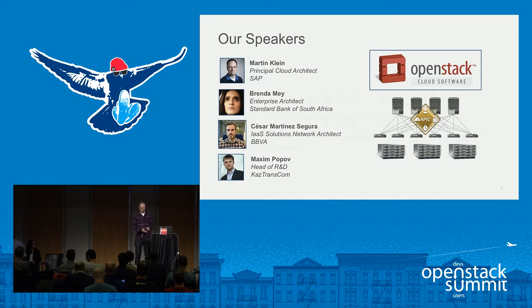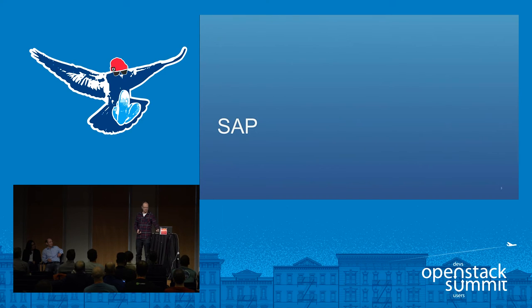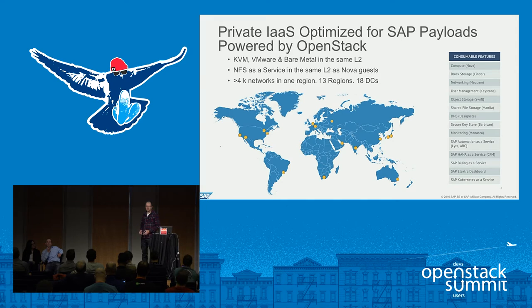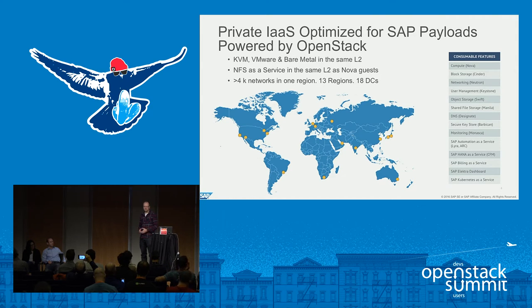Hello everybody. As Mike mentioned, I'm working for SAP. We are a software company based in Germany and we are market leader in enterprise software. As most software companies, we are currently undergoing a transformation from delivering our products on premise to delivering cloud solutions. For that, we need a private cloud optimized for our workloads, which are not yet in a state where we can deploy them in a public cloud environment very easily. This is why we decided to build our own sub-optimized cloud powered by OpenStack.